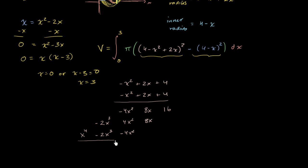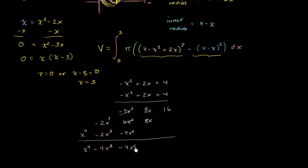Now we just have to add up all of these terms. We get x to the fourth, then adding the cubic terms gives minus 4x to the third. The x squared terms cancel except for one, giving minus 4x squared. Adding the x terms gives plus 16x, and then plus 16.